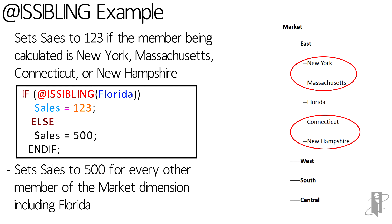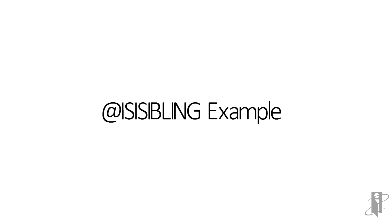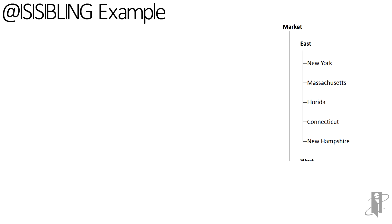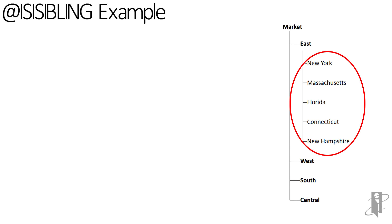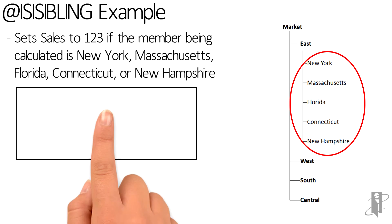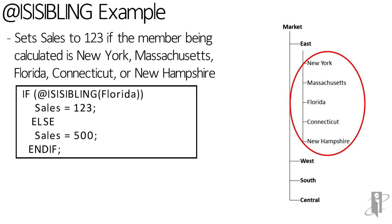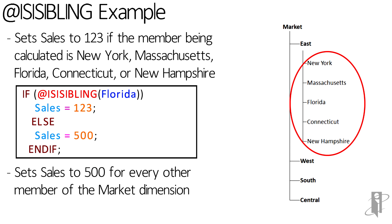For all other members, including Florida itself, sales will be set equal to 500. If you want to include the Florida member — so basically every member that has the same parent as the member you specify — you use isIsSibling. This is one of those rare cases where the 'i' syntax of the function is probably the one more often used, because we want to make sure we're getting all of the children that share that same common parent.